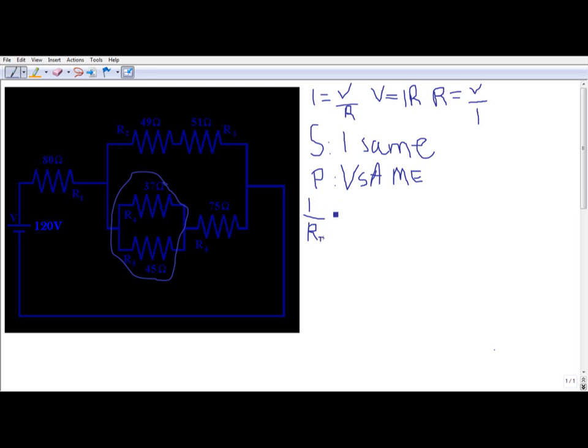The total resistance is equal to the inverse, which is the same as one over R1 plus the inverse, or one over R2, and so on and so forth.